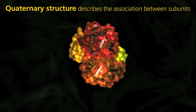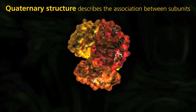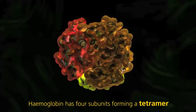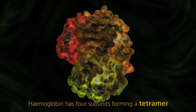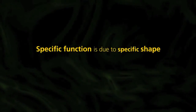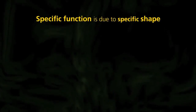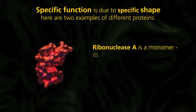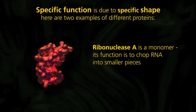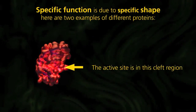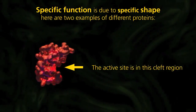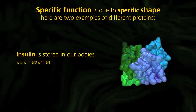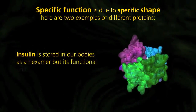Tertiary structure is the globular unit into which the amino acid chain folds, held together by disulfide bridges and ionic bonds. Quaternary structure describes the association between subunits, where each subunit is a separate amino acid chain. Hemoglobin has four subunits, forming a tetramer. Specific function is due to specific shape. Ribonuclease A is a monomer whose function is to chop RNA into smaller pieces, with an active site in the cleft region. Insulin is stored in our bodies as a hexamer, but its functional unit is a monomer.